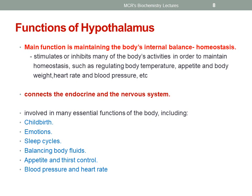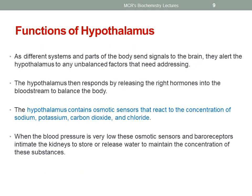It is involved in many essential functions of the body including childbirth, emotions, sleep cycles, balancing body fluids, appetite and thirst control, and maintaining blood pressure and heart rate. As different systems and parts of the body send signals to the brain, they alert the hypothalamus to any unbalanced factors that need addressing.